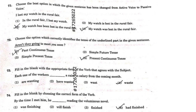Question 71 is the first question of General English. We are learning from active and passive, and it was very difficult for the General English portion compared to the PGT exam. Moving on to the first question: Choose the best option in which the given sentence has been changed from active voice to passive voice.